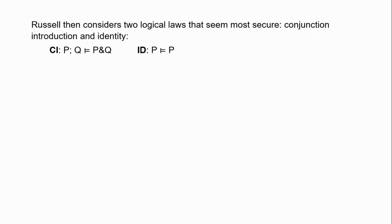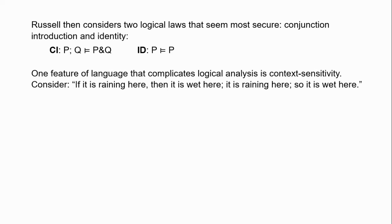Russell begins by noting that one of the problematic features of language is context sensitivity — context-sensitive expressions are those that change their reference with the context. Take the word 'here': it refers to a different place depending on who uses it. So if we take the argument 'if it is raining here then it is wet here; it is raining here; therefore it is wet here' — if it's raining where I am and sunny where you are, and I assert the premises while you assert the conclusion, then we get true premises and a false conclusion. Apparently a counterexample to modus ponens.